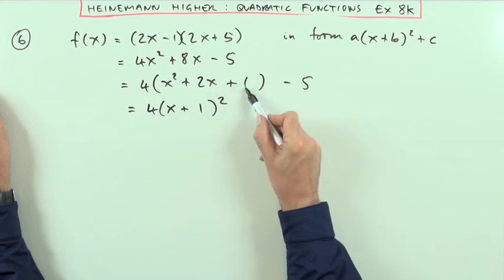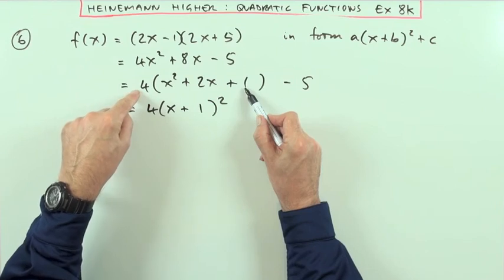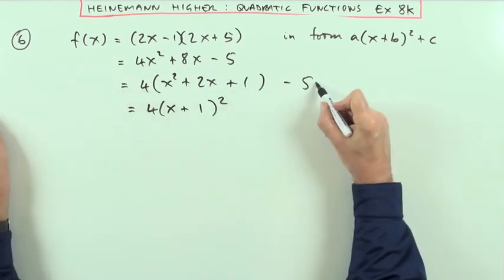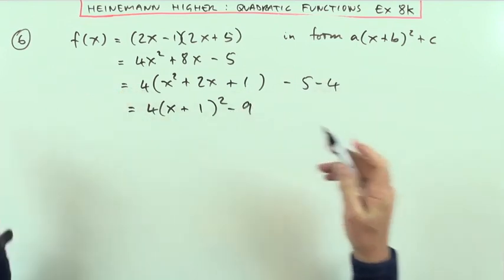I haven't introduced just 1, I've introduced 4 ones. So if I've put 4 into it, I'll have to take 4 off of it, so that's minus 9, and that's it done.